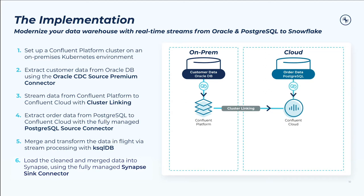Fourth, we'll extract order data from our second data source already in the cloud — that's the Postgres cloud instance — using the fully managed Postgres source connector, putting that data into Confluent Cloud. Five, once all of our data is in Confluent Cloud, we'll merge and transform the data sources with ksqlDB, generating a unified 360-degree view of the customer. Note that for basic transformations like filtering or masking, some of that can be done in Kafka Connect using single message transforms, or SMTs, at the level of the source connector — but for our purposes today, we're going to keep it all in ksqlDB because it is a more powerful and generalizable tool.